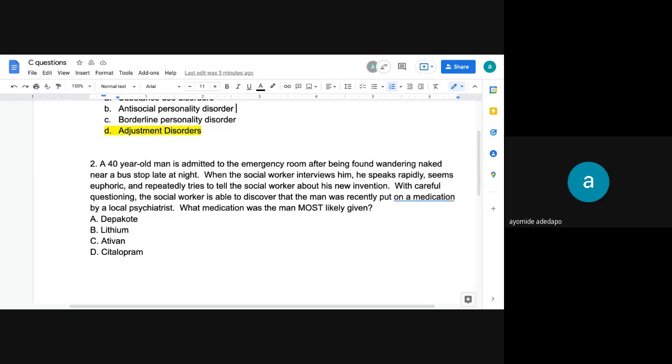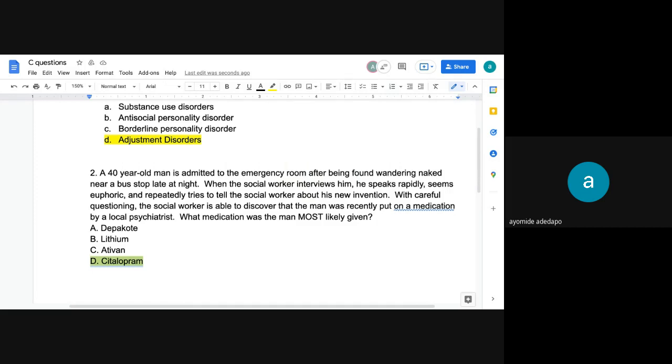But the correct answer here is D. Citalopram, more likely known or more commonly known as Celexa. So I hope that was clear. I hope you understood. If you don't, leave a comment. I'll make sure to answer you. So I'm just going to go over it again. So in this question, it was just asking what medication would he most likely be on? And that's why he is having this hypomanic or manic episode going on. So we know it wouldn't be A or B because those are usually given to people who may be facing symptoms of mania, right? So those two are usually given. Ativan is an anti-anxiety medication. And right now we don't see any symptoms of anxiety, but we do see symptoms of mania.